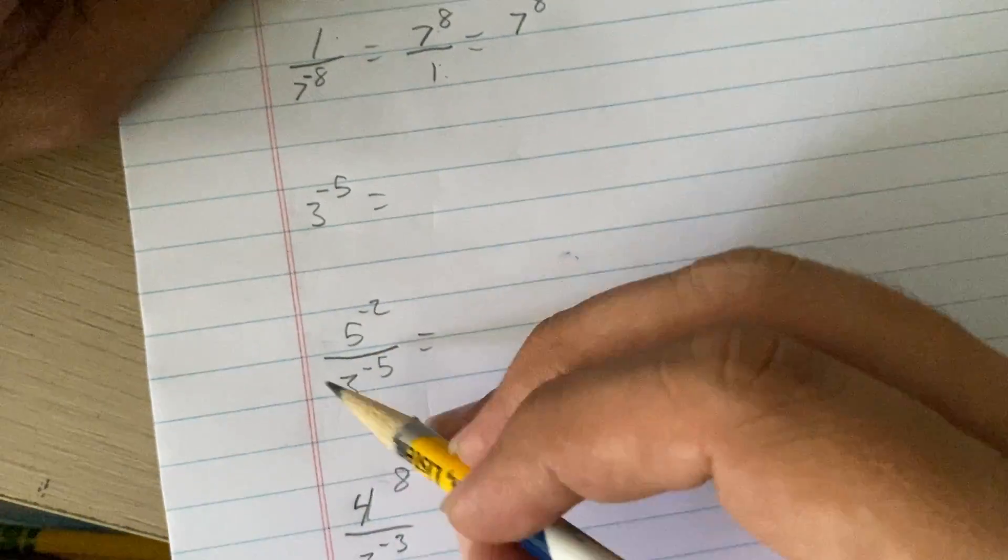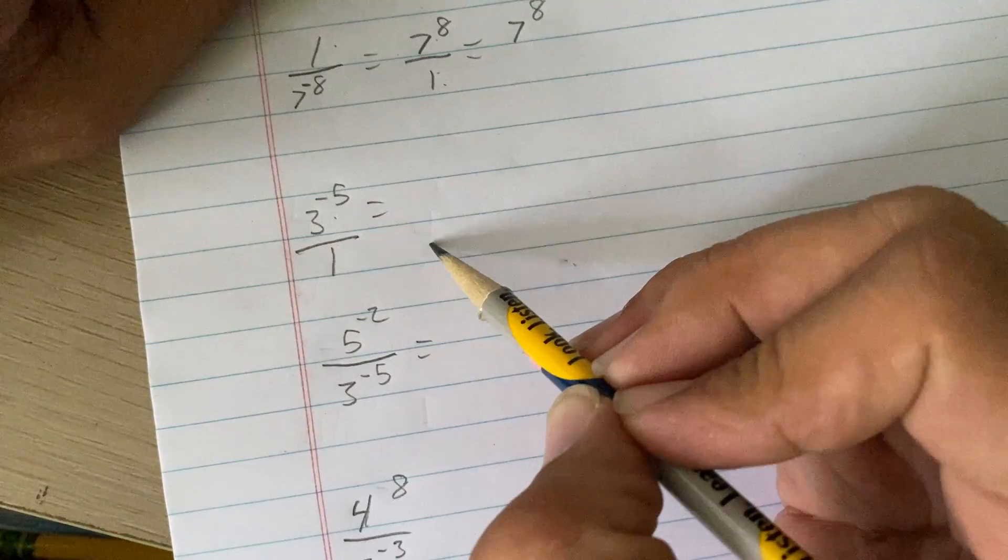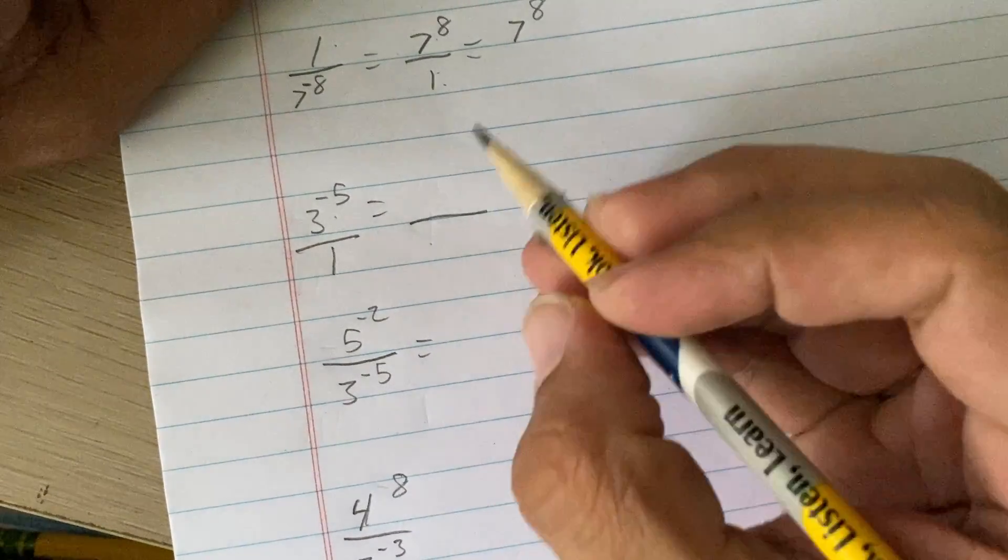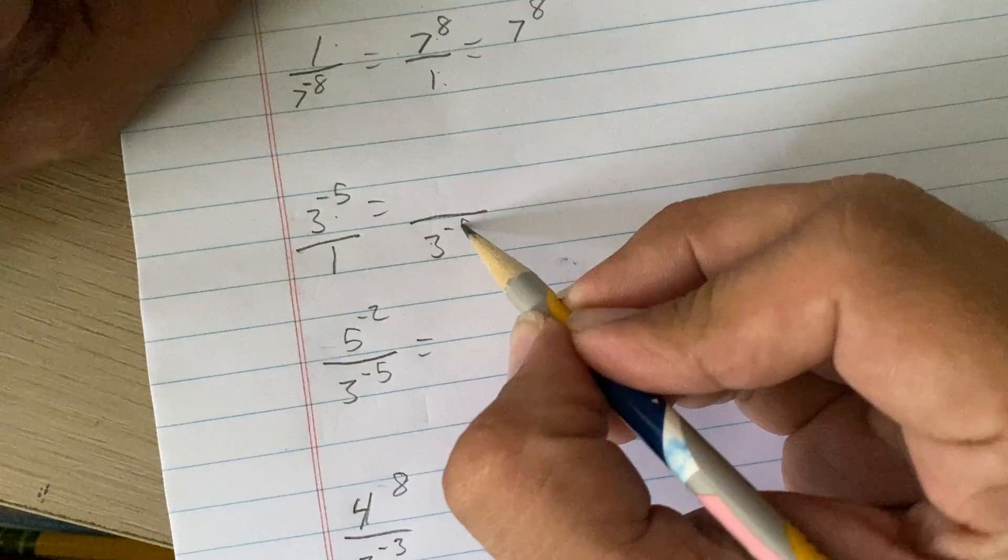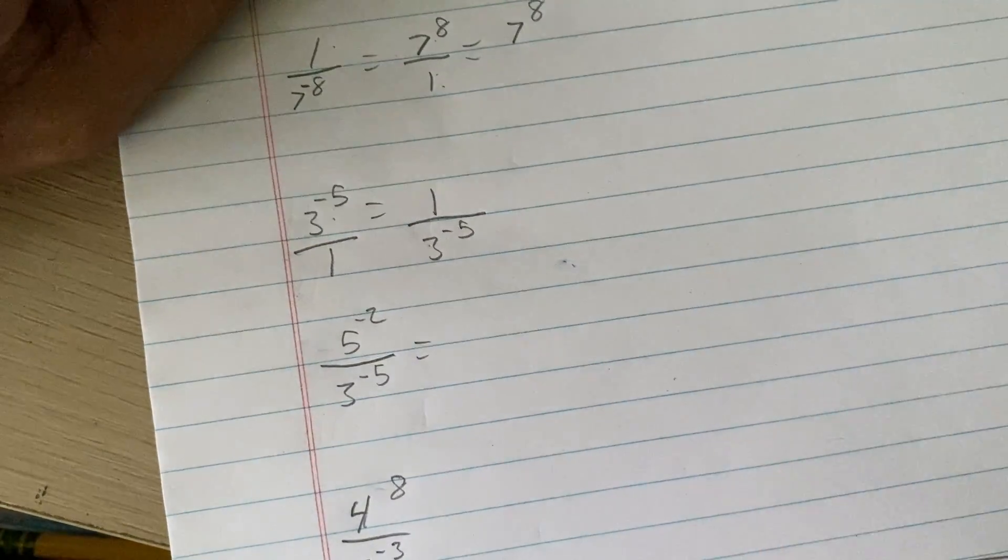It kind of looks like this, which means this belongs at the bottom of the fraction. So, I'm going to put it at the bottom of the fraction. There's nothing left up there, so I'm going to put a 1.